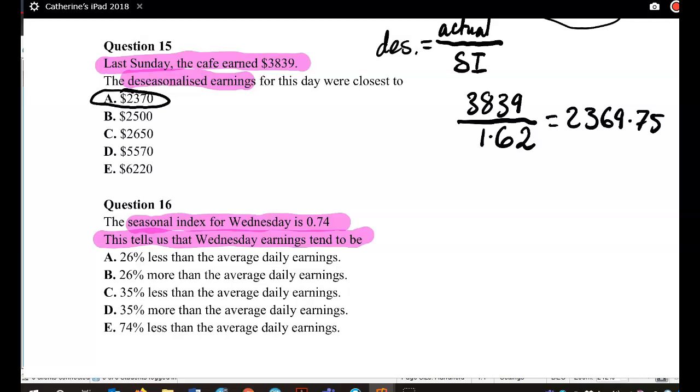Here, we're below 1. So 1 take away 0.74, 0.26. So that means that is 26% below our average, below the average daily earnings.